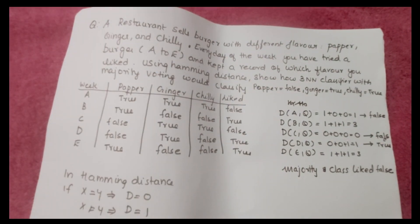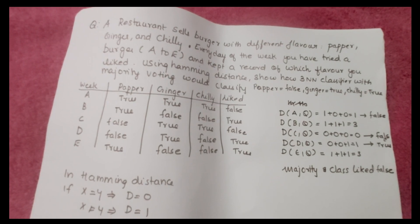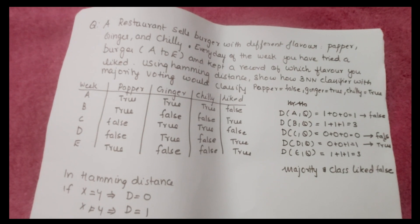We have studied lazy learners and the example of a lazy learner — the k-nearest neighbor classifier. We solved two problems: one based on Euclidean distance and one based on Hamming distance. I hope you understood. Thank you.